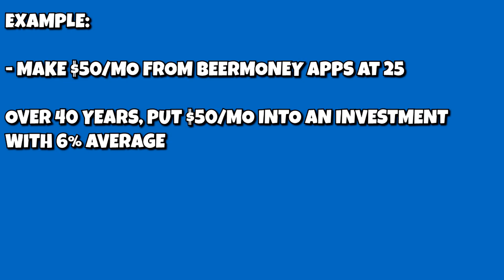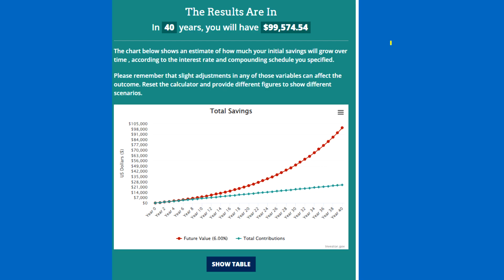Let's say you only make $50 a month in beer money starting at the age of 25, and you invest $50 a month every month over the next 40 years into something making 6% a year — a relatively safe return, something like a 50-50 stocks-bonds portfolio. There are many times that even iBonds, depending on when you buy them, will yield 6% for you. By the time you are 65, that beer money engine will end up making $99,574.54. For those of you in your 20s, having an extra $100,000 in retirement doesn't really sound like a terrible idea, does it?